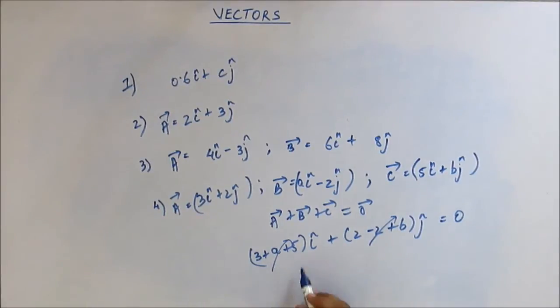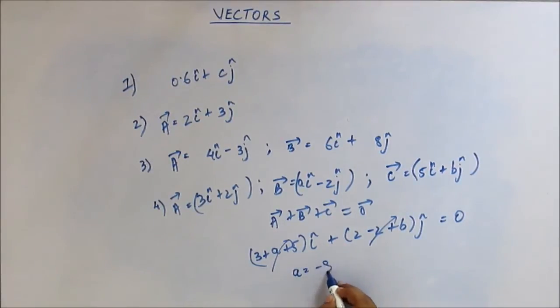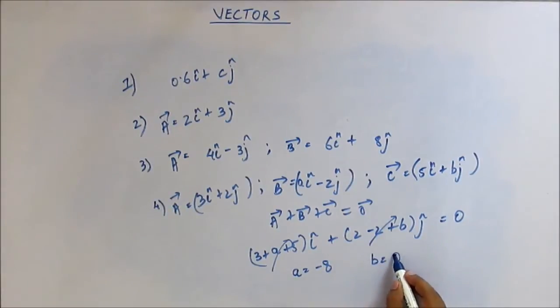Doing the summation gives (3 + A + 5)i cap + (2 − 2 + B)j cap = 0. For the i-component to be zero, A should equal −8. For the j-component to be zero, B should equal 0. So that is your answer.